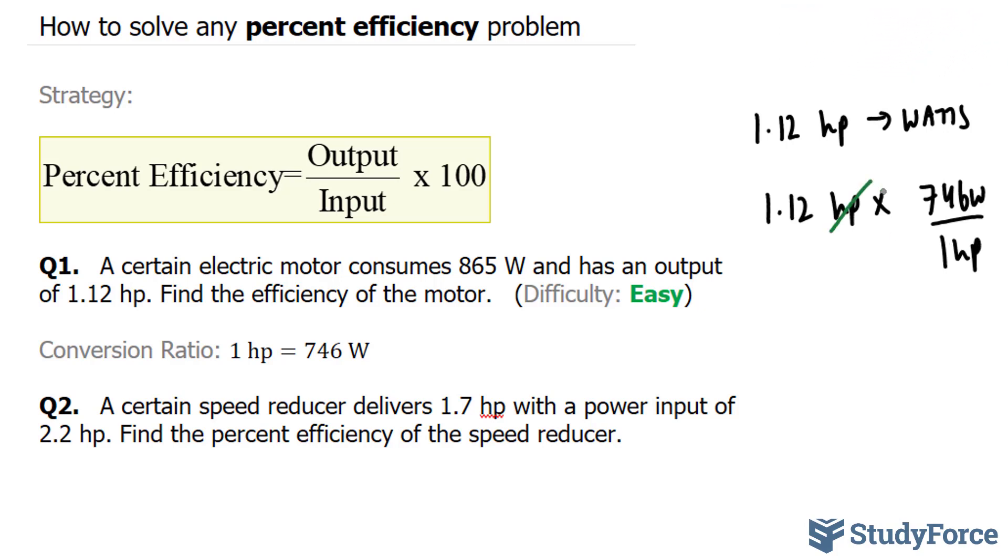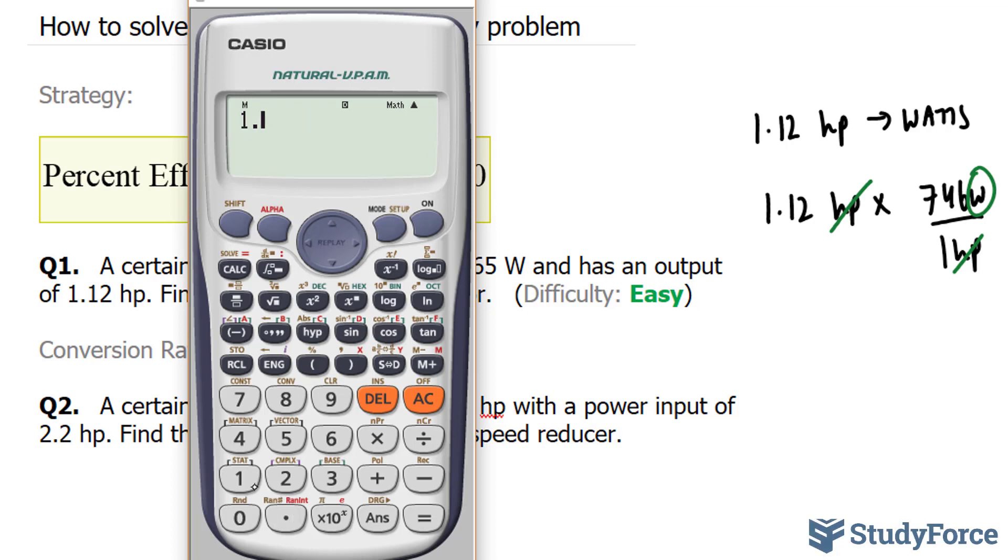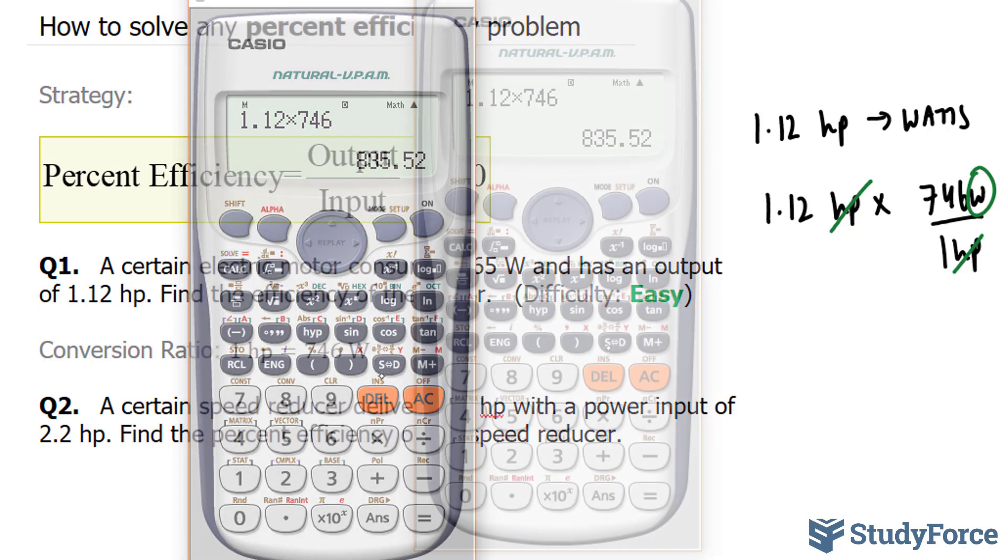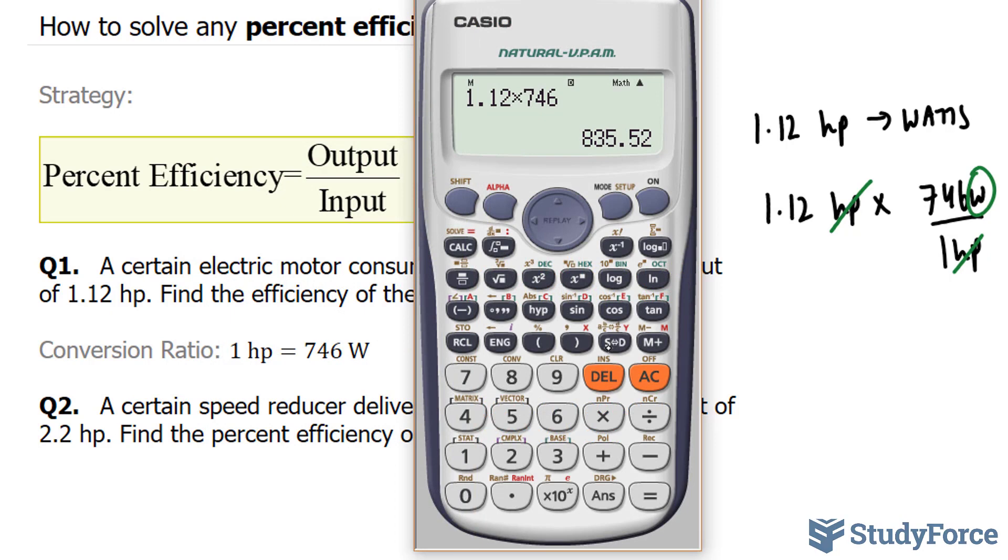And this way, the units will cancel out, leaving us simply with watts. So 1.12 times 746 gives us 835 watts, 835.52.